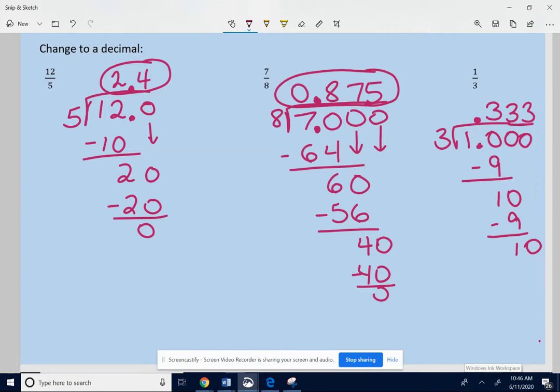So 1 third is equal to 0.333 repeating. So you could write 0.333 dot dot dot. I don't know if you've seen this in your other math classes, but you could use a repeating bar over the 3 to show it goes on forever. That's a repeating bar. But either way, it means 0.33333 forever and ever and ever.